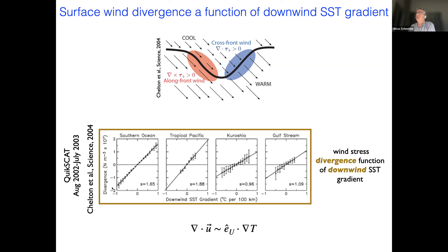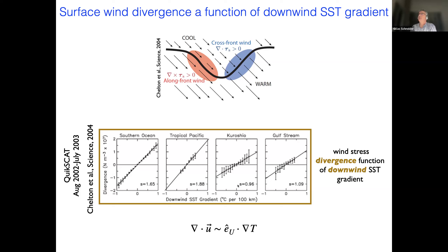That's observed. We have scatter plots from several areas of the world's ocean — the Southern Ocean, the tropical Pacific, tropical instability waves, the Kuroshio and Gulf Stream — shown as a scatter plot between the downwind sea surface temperature gradient and the surface wind divergence. The dot product between the unit vector of the winds and the SST gradient is plotted against the surface wind divergence, and you see very tight correlations with slopes that vary from region to region, but you always have this tight relationship.